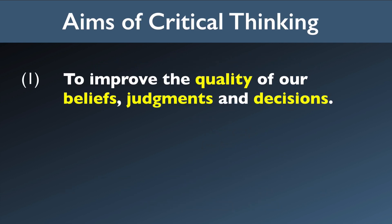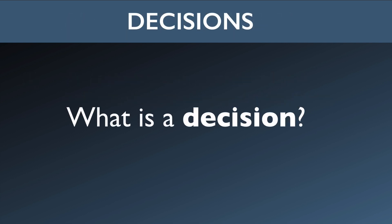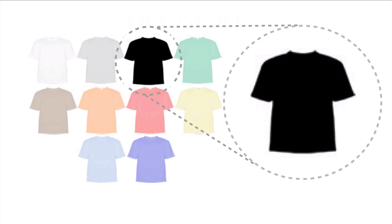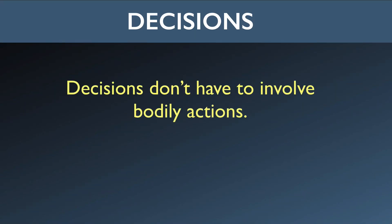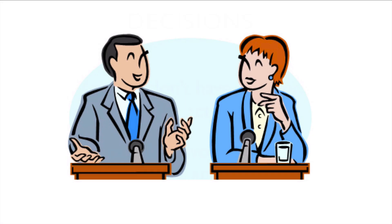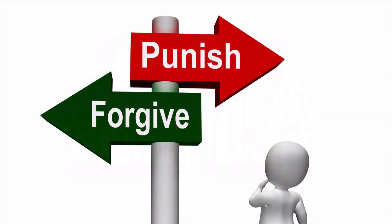Now let's swing over to the other side and talk about decisions or choices. Decisions are different from beliefs. A decision is a cognitive process of some kind that leads to a course of action. I decide to wear my black t-shirt today. I decide to go to the movies after dinner. I decide to vote for this candidate over that candidate. Decisions don't have to involve bodily actions — they can also involve changes in cognitive attitudes. I can decide to accept your argument or reject it.